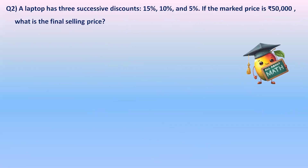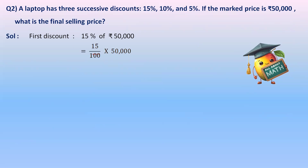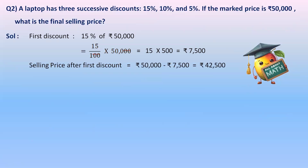Let's do another example. A laptop has three successive discounts: 15%, 10%, and 5%. The marked price is 50,000 rupees. What is the selling price? We first find the first discount: 15% of 50,000 = 15/100 × 50,000 = 7,500 rupees. Selling price after the first discount: 50,000 − 7,500 = 42,500 rupees.